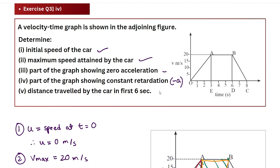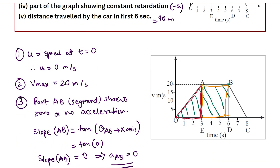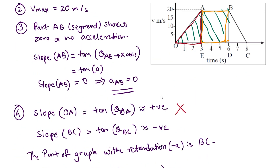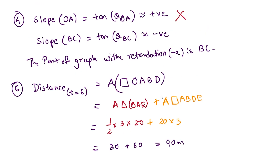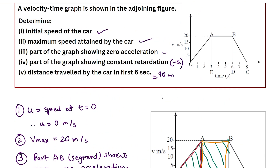So that was question number four from the exercise — a graph-based question with important properties you need to learn. You can take a screenshot of the first half covering parts one through four, and then a screenshot of the fifth part covering the distance calculation. I hope you understood this question. Thank you.